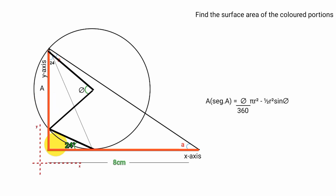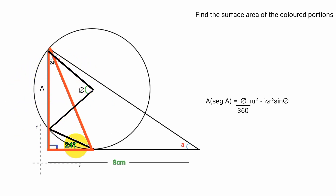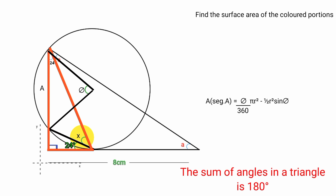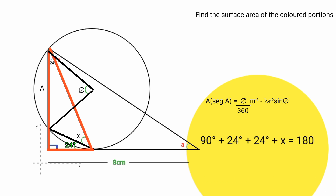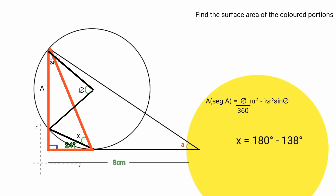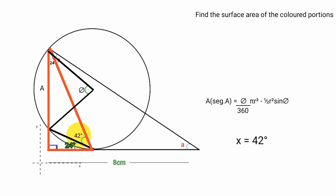That implies this angle is a right angle. From this triangle, since we have the sizes of the angles, we can label this and based on the rule that the sum of angles in a triangle is 180 degrees: 90 degrees plus 24 degrees plus 24 degrees plus x equals 180 degrees. 90 plus 24 plus 24 is 138, so 138 plus x equals 180. Subtracting 138 from both sides, x equals 42 degrees.